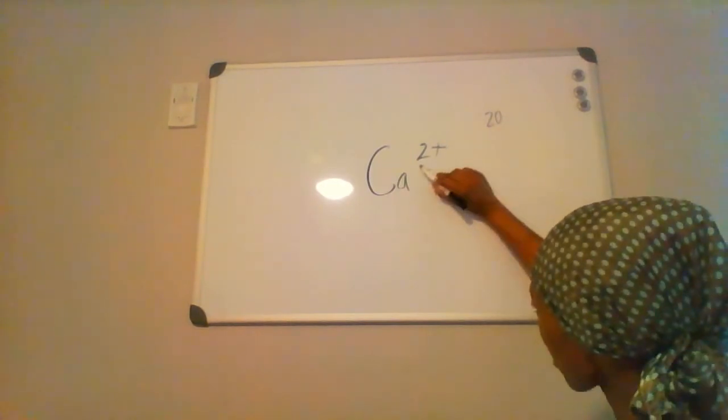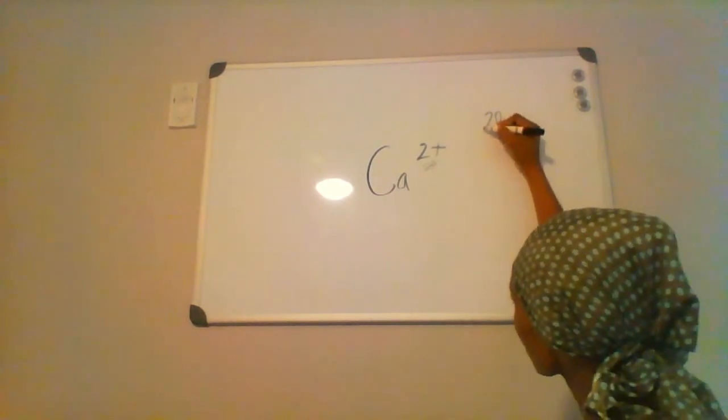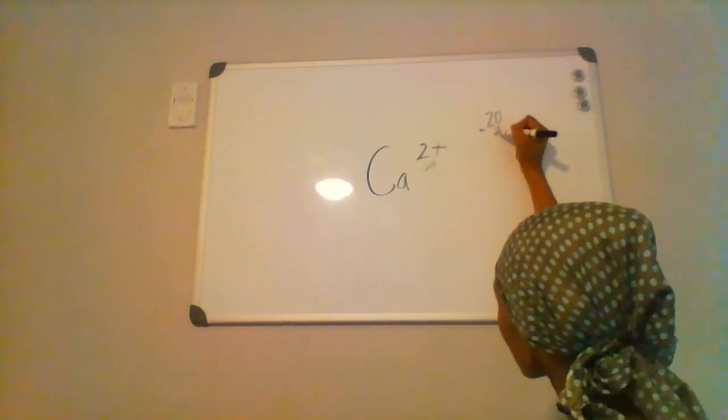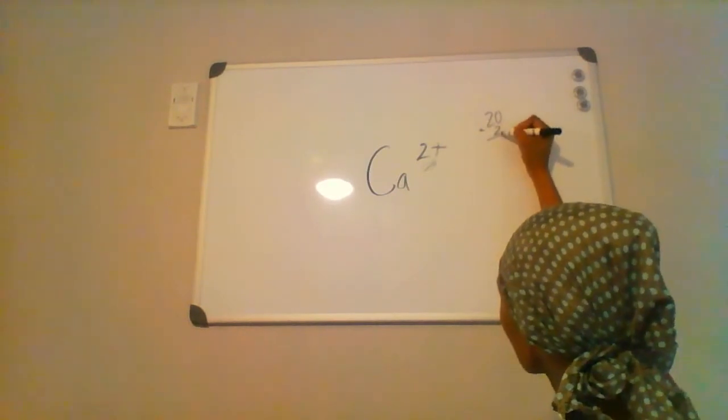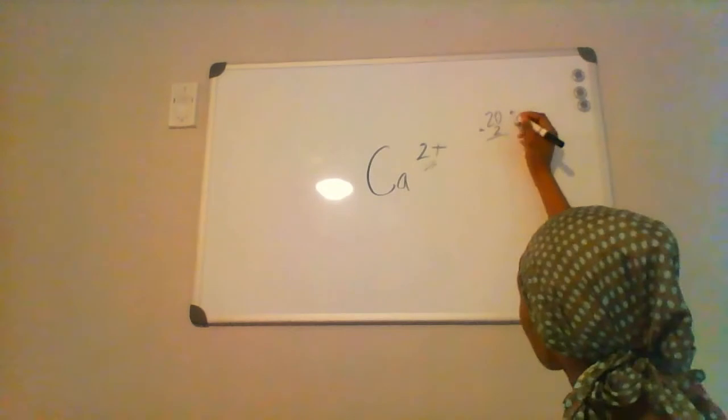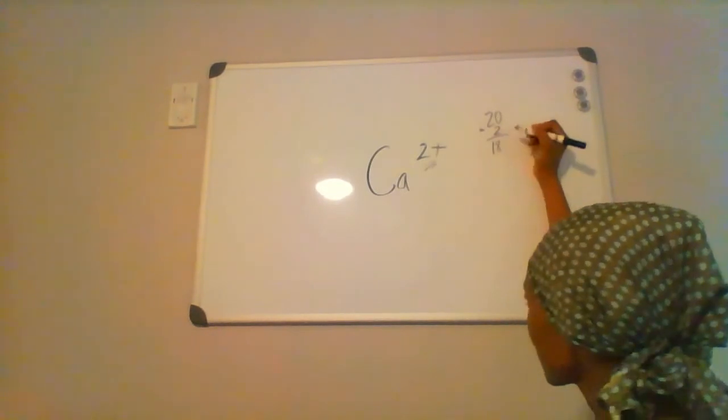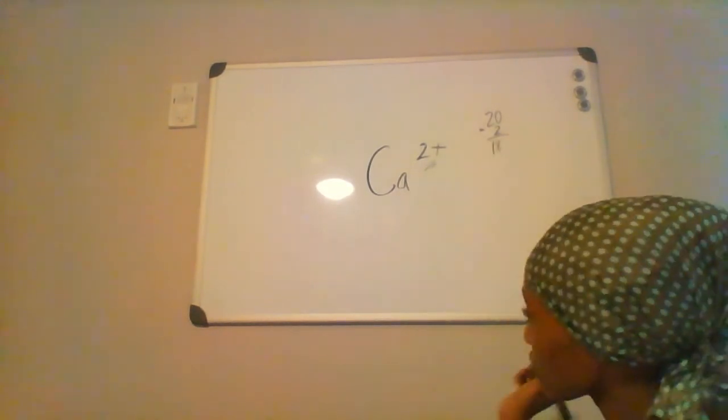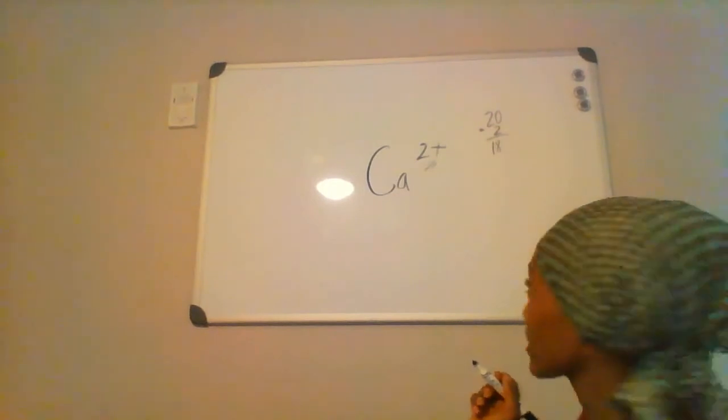But this has a charge of plus two, so we're going to do the opposite and subtract two electrons, or two equivalents of negative charge, leaving us with 18 balanced electrons orbiting the nucleus.